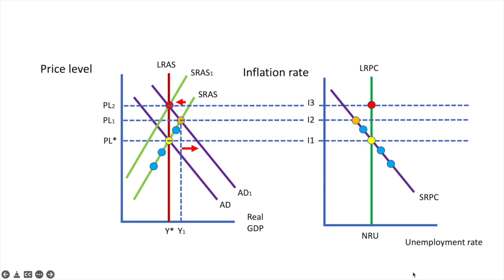Let's see what would happen if aggregate demand shifted along any points of short-run aggregate supply curve 1. Again, the corresponding points will match on both diagrams. These three dots look strange standing alone; however, when we see a shift in aggregate supply, we also see that the short-run Phillips Curve shifts — almost like a mirror image. If the short-run aggregate supply curve shifts leftward, the short-run Phillips Curve shifts rightward.